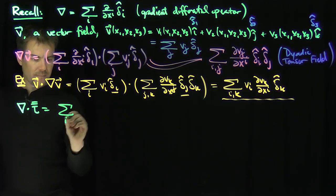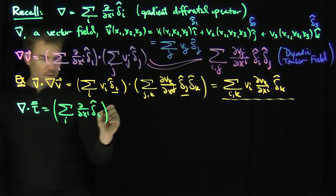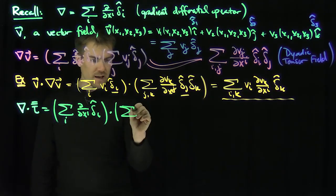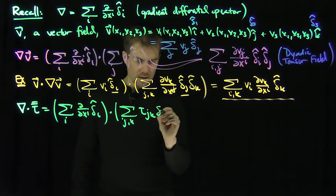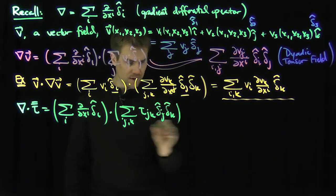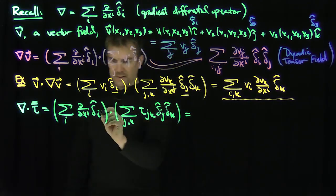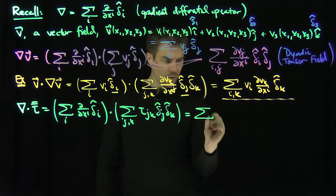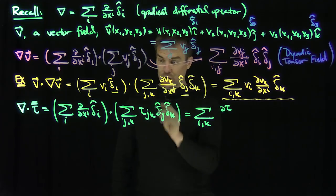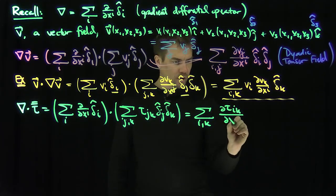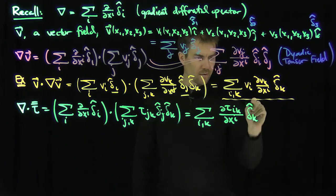This would be the sum over i of d by dxi delta i hat, my gradient operator, single dot the sum over j and k of tau jk delta j hat delta k hat. This turns into a delta ij, so I'm going to sum over i and k of partial tau ik partial xi in the direction of delta k.